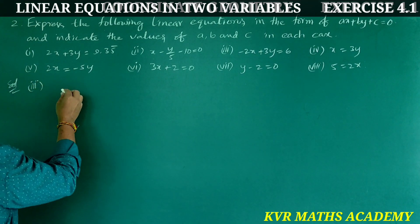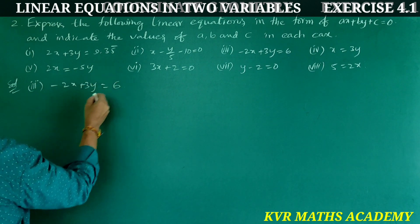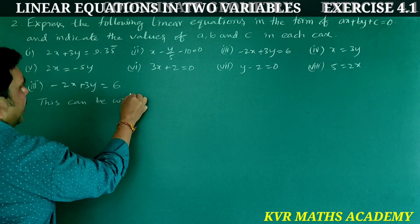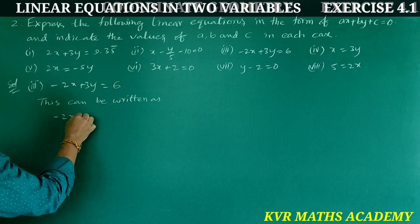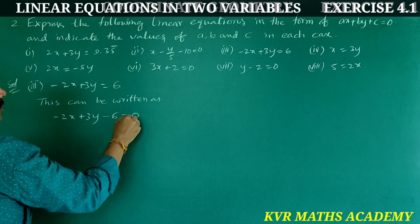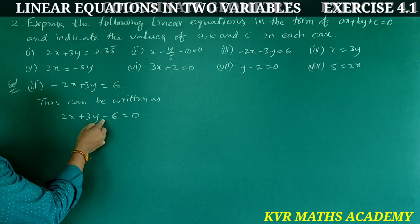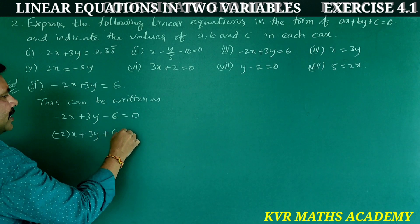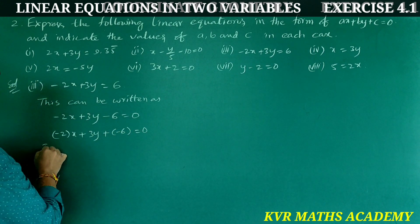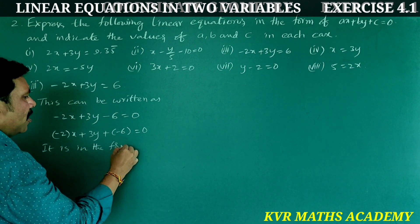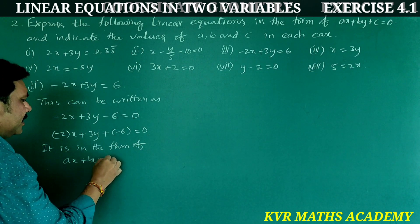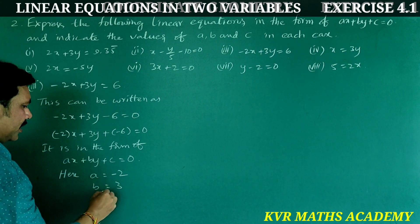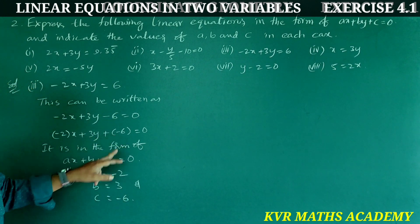Third: −2x + 3y = 6. This can be written as −2x + 3y − 6 = 0. Comparing with ax + by + c = 0: a = −2, b = 3, and c = −6.